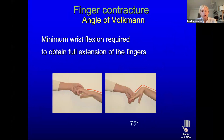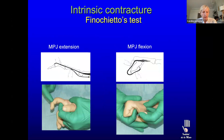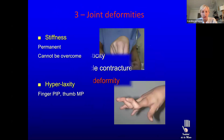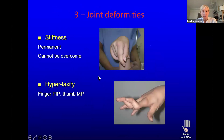The assessment of spasticity is difficult. The commonly used Ashworth scale is not very satisfying — it's too general and too examiner-dependent. We now favor more and more the Tardieu scale with the V3 angle of catch. This is velocity-dependent; you have to do it fast to find the catch angle, and this is much more precise in order to examine the spasticity.